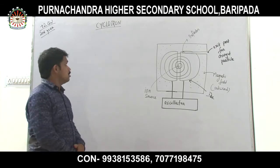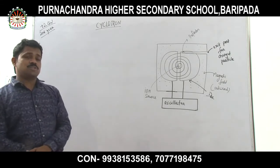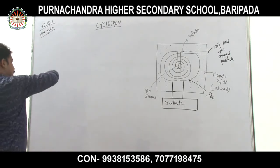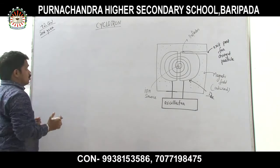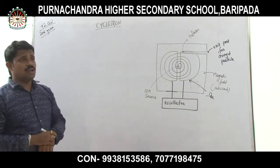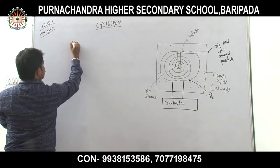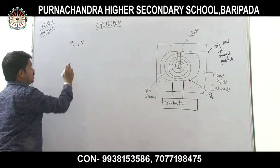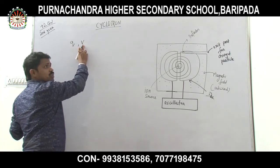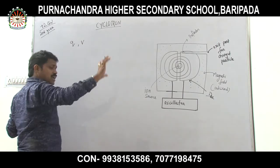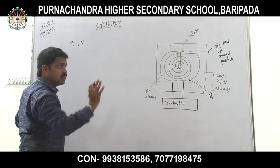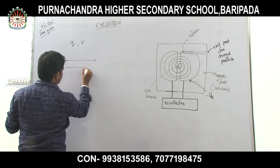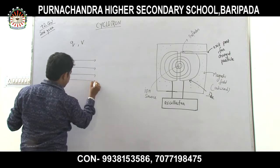Before going to discuss about the cyclotron, let us first discuss on which principle the cyclotron is basically based upon. So suppose a charged particle Q is moving with a velocity V, and it enters a magnetic field B perpendicularly, or normal to the magnetic field.